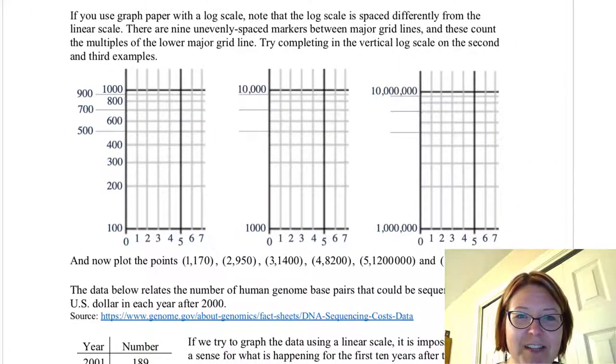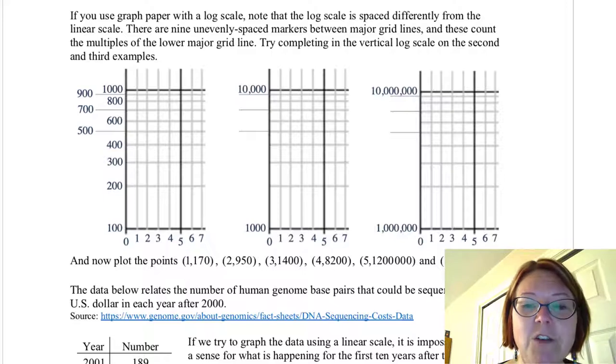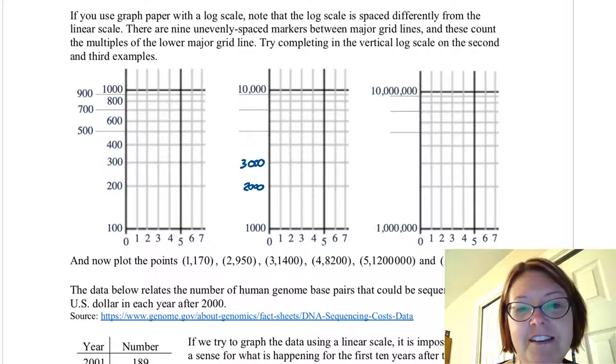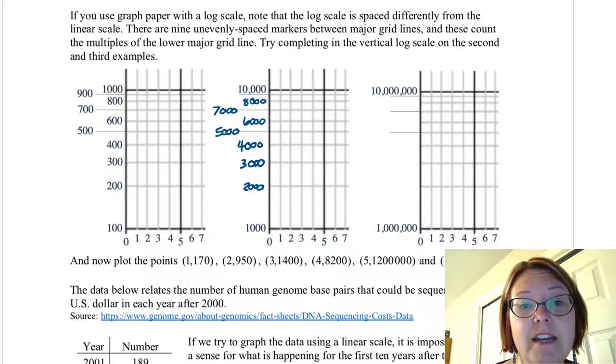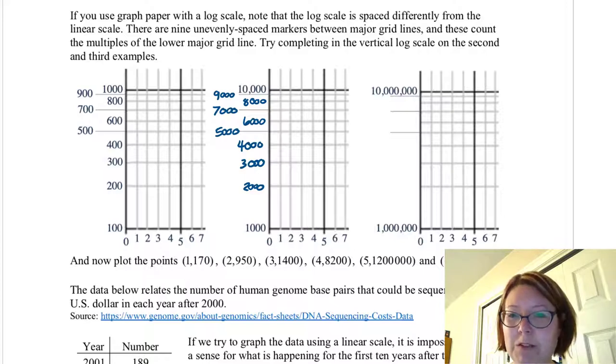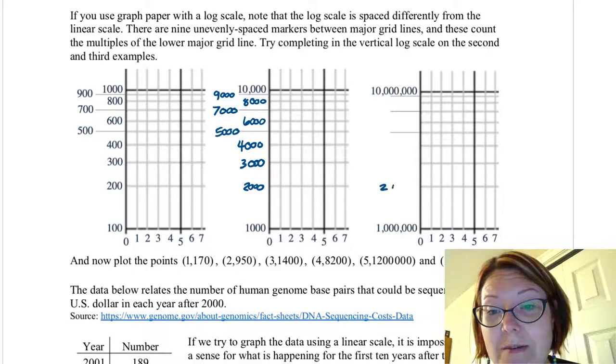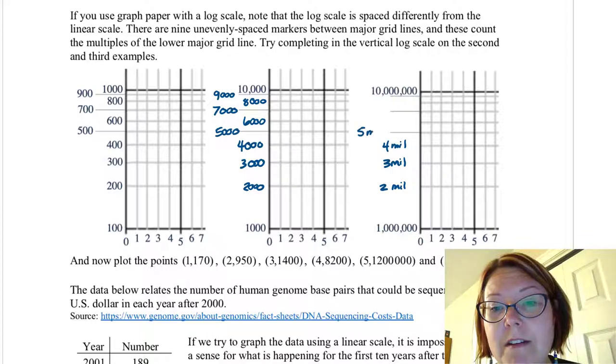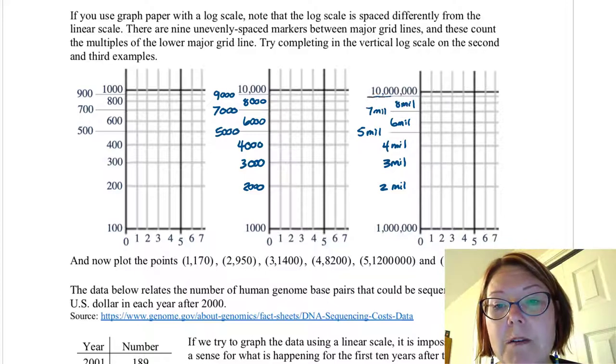Okay, we're back. Let's see how you did. The unevenly spaced markers between the major grid lines should be multiples of the bottom major grid line. So the bottom major grid line here is 1000, so if we're using multiples of that it should be 2000 for the first unevenly spaced line, 3000 for the next unevenly spaced line, then 4000, 5000, 6000, 7000, 8000, and 9000. That line really close to the top, really close to 10,000. For the third graph we started with a million, so we want multiples of a million. So 1 million, then 2 million, I'm just going to write 2 MIL, then 3 million, 4 million, 5 million. Remember these are not evenly spaced. 6 million, 7 million, 8 million, and this line really close to 10 million is 9 million.